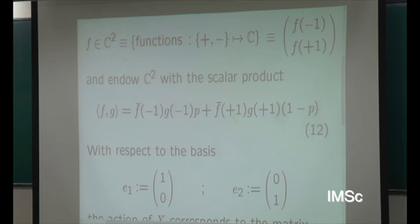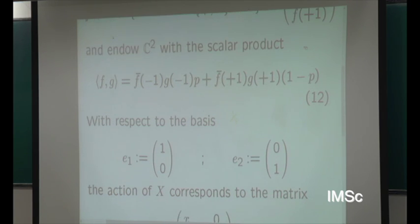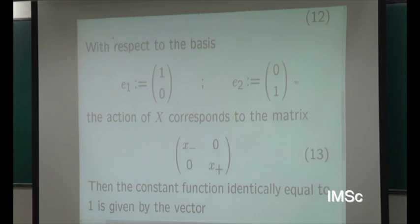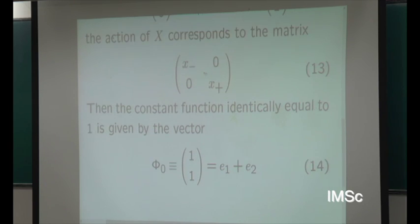The scalar product is the one defined by the P·(1−P) measure. The representation of the position operator is simply the diagonal matrix, diagonal in the orthonormal basis — it will not be diagonal in the monic basis. To have an idea of our vectors in the two-by-two representation, the first orthogonal polynomial corresponds to the subtraction of the mean from the standard vector.